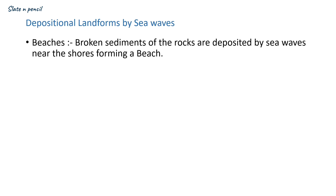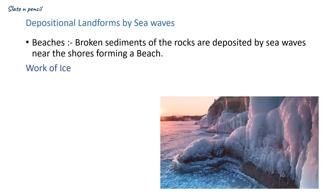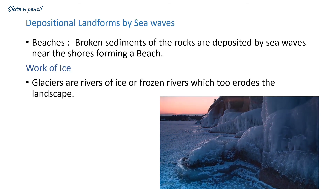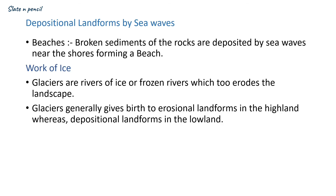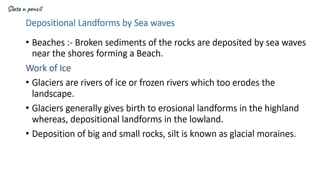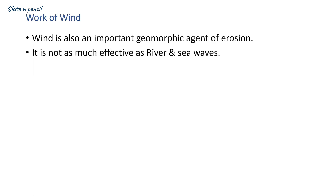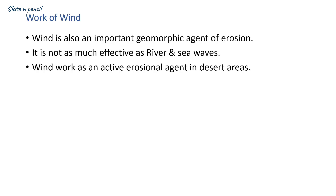Now we will discuss landforms formed by ice and wind. Glaciers are rivers of ice or frozen rivers which also erode the landscape. They generally give birth to erosional landforms in the highlands and depositional landforms in the lowland areas. The deposition of big and small rocks and silt by a glacier is known as glacial moraine. Wind is also an important geomorphic agent of erosion, but it is not as effective as rivers or sea waves. Wind works as an active erosional agent in desert areas.